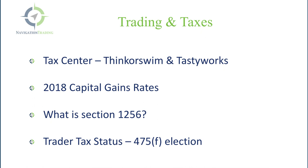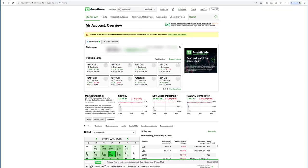We're going to cover a few things in this short video: we'll go through the tax center of thinkorswim and tastyworks, show you where to find your forms and deadlines. We'll talk about the 2018 capital gains rates, what Section 1256 is — there are specific symbols and contracts with different tax treatment — and if you're in a position to elect trader tax status, we'll give you some resources for that as well.